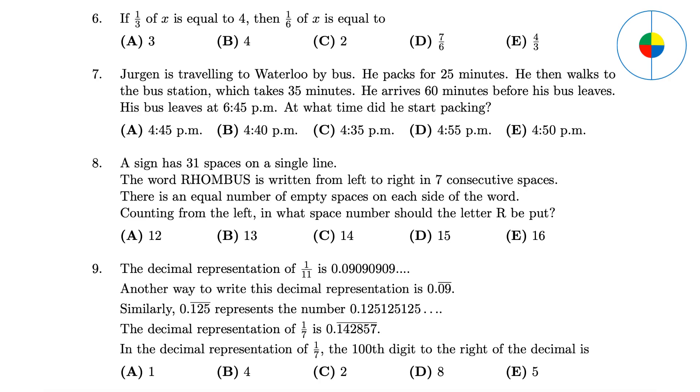Question 7 - This is about time. 2 hours before 6:45 PM is 4:45 PM. Question 8 - The total number of empty spaces is 31 minus 7, which is 24. So for each side, there are 12 empty spaces. So the answer is 13.